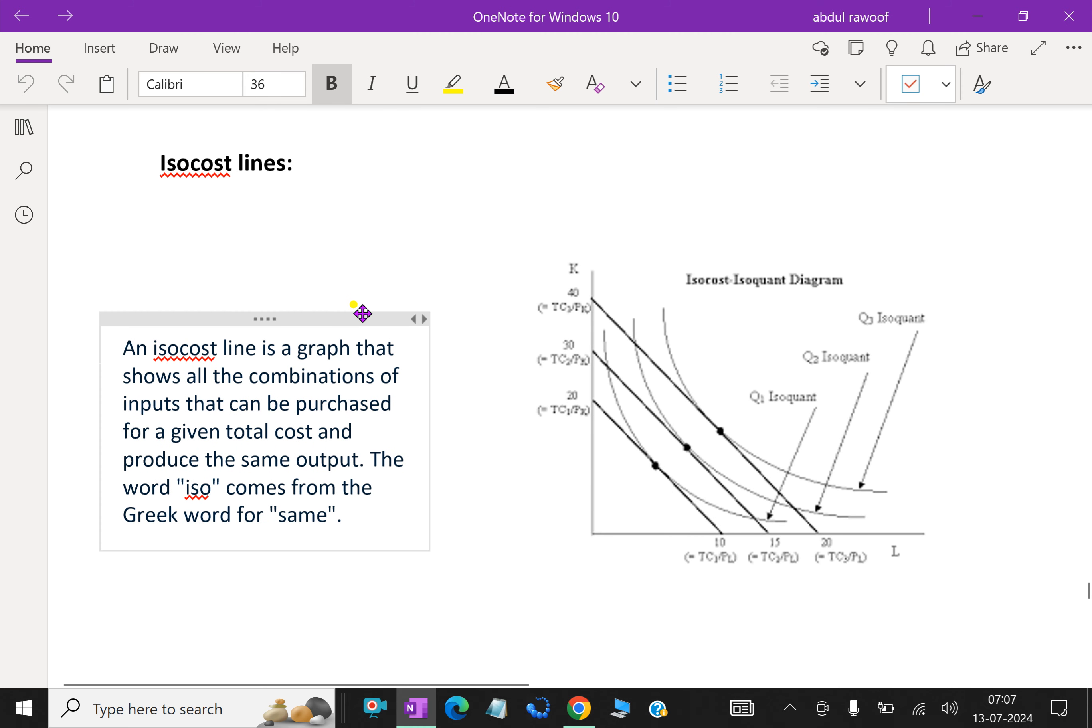First we will discuss about isocost line. An isocost line is a graph that shows all the combination of inputs that can be purchased for a given total cost and produce the same output. The word iso comes from the Greek word meaning same. An isocost line represents the different combination of two inputs or factors of production that can be purchased with a given sum of money.